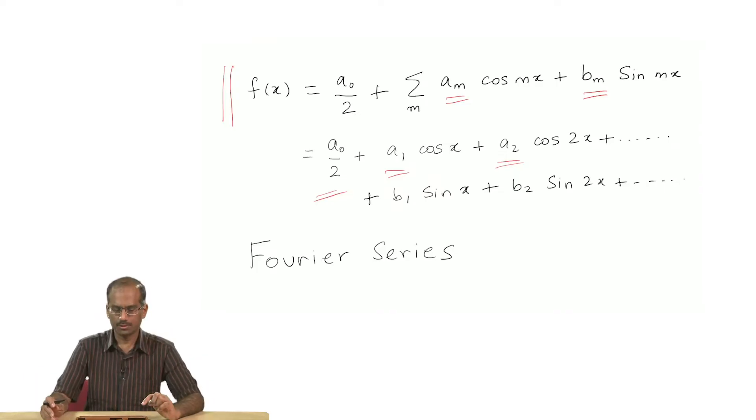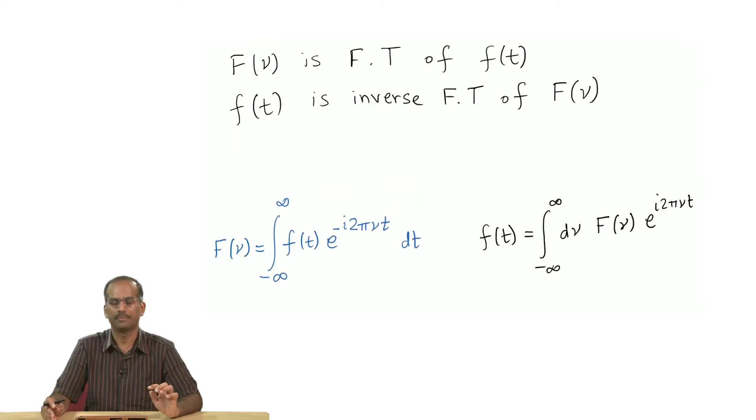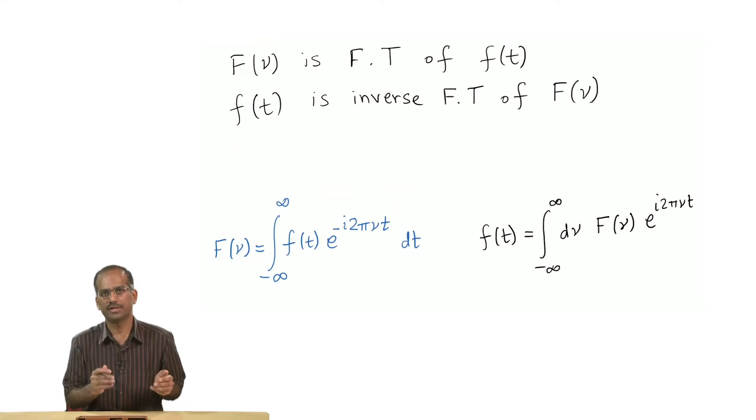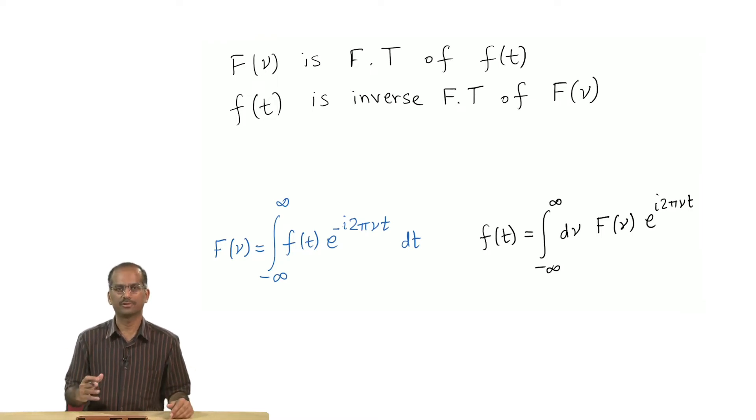Then we took the continuum limit, we went from Fourier series to Fourier transform. In this case we have a pair of functions. Given f of t, here it is more convenient to think of your function as being a function of time, but it does not necessarily have to be a function of time.